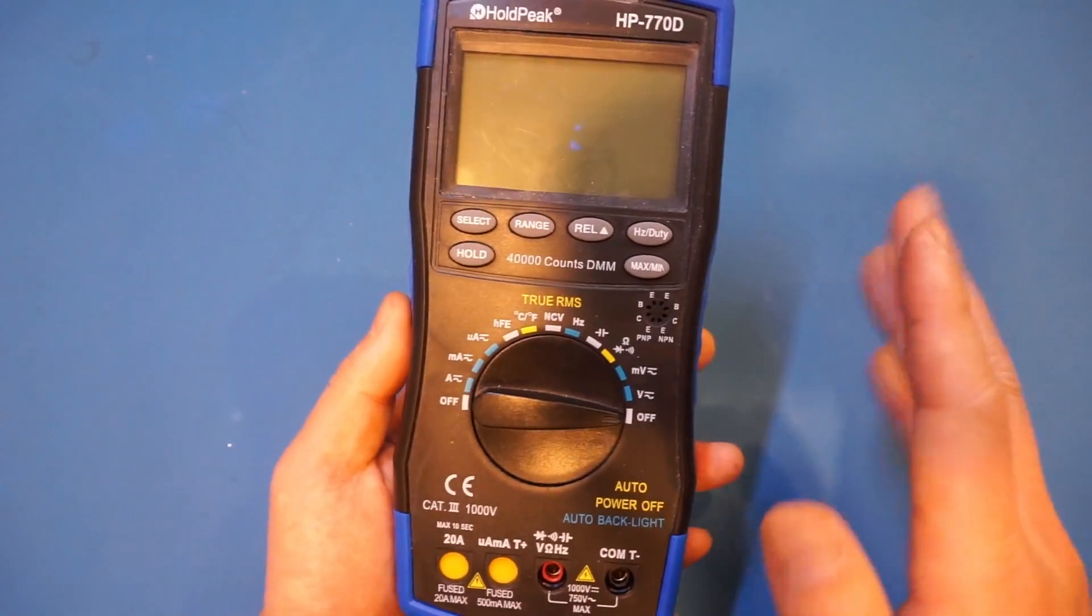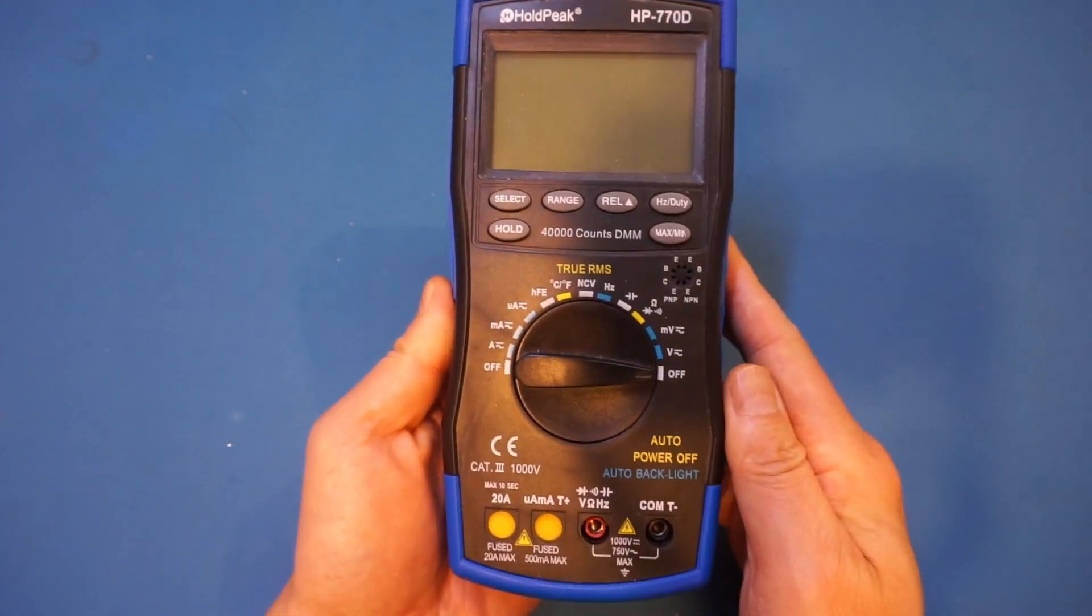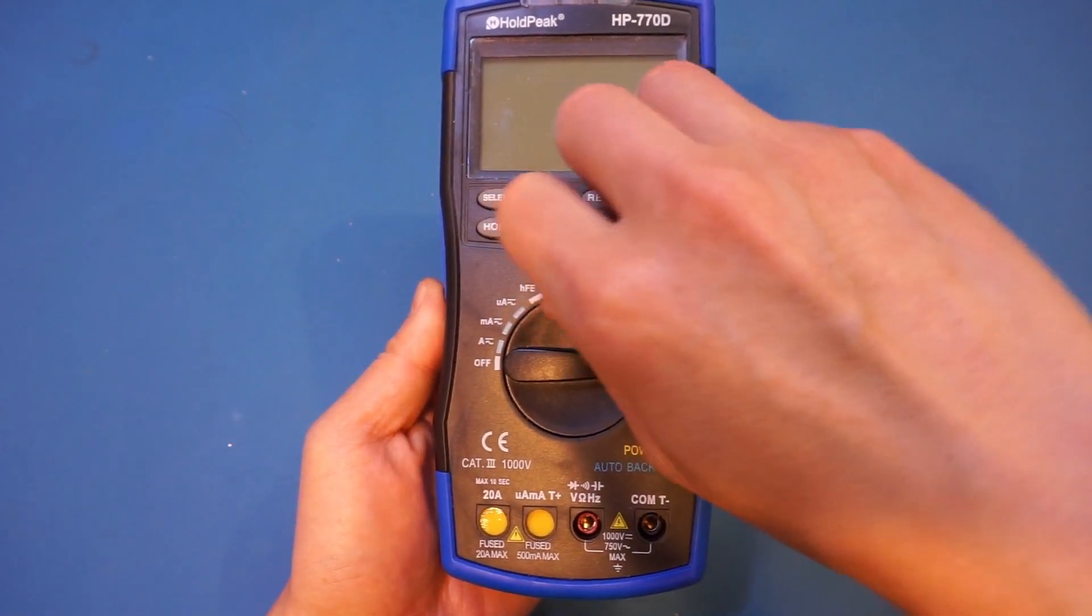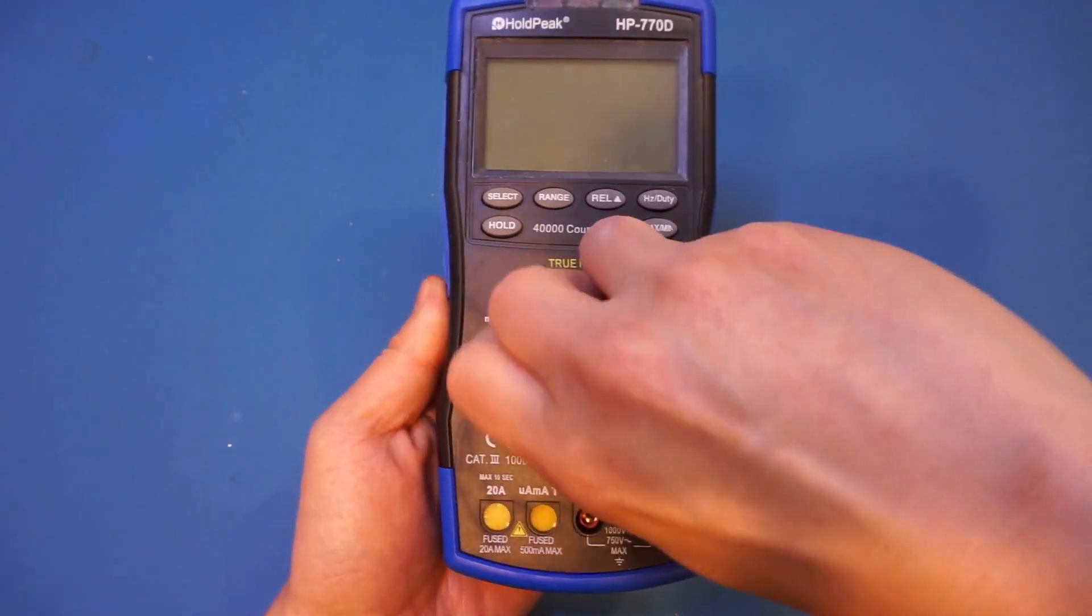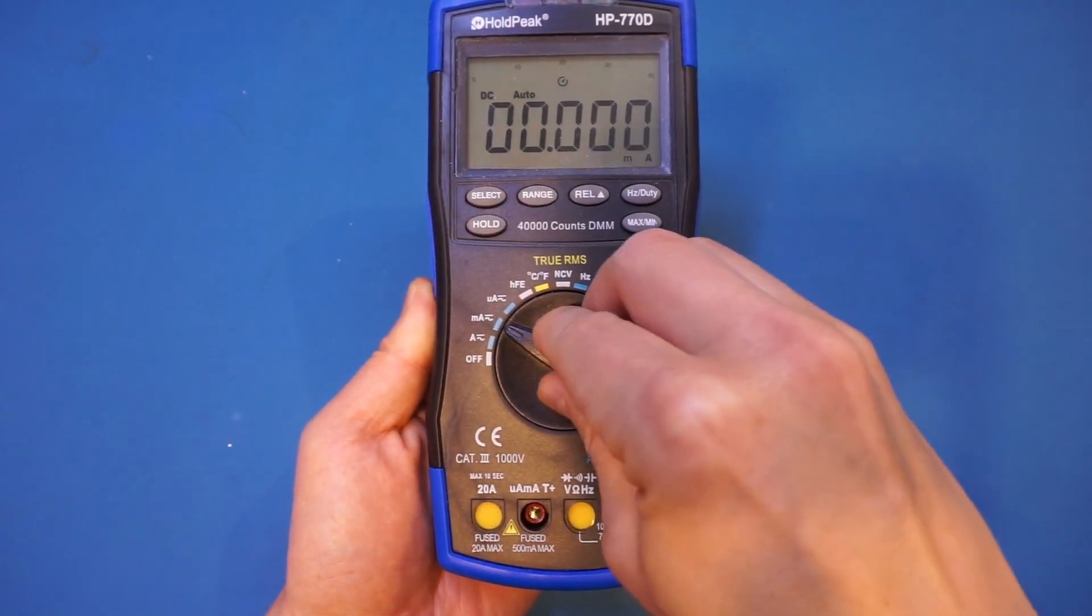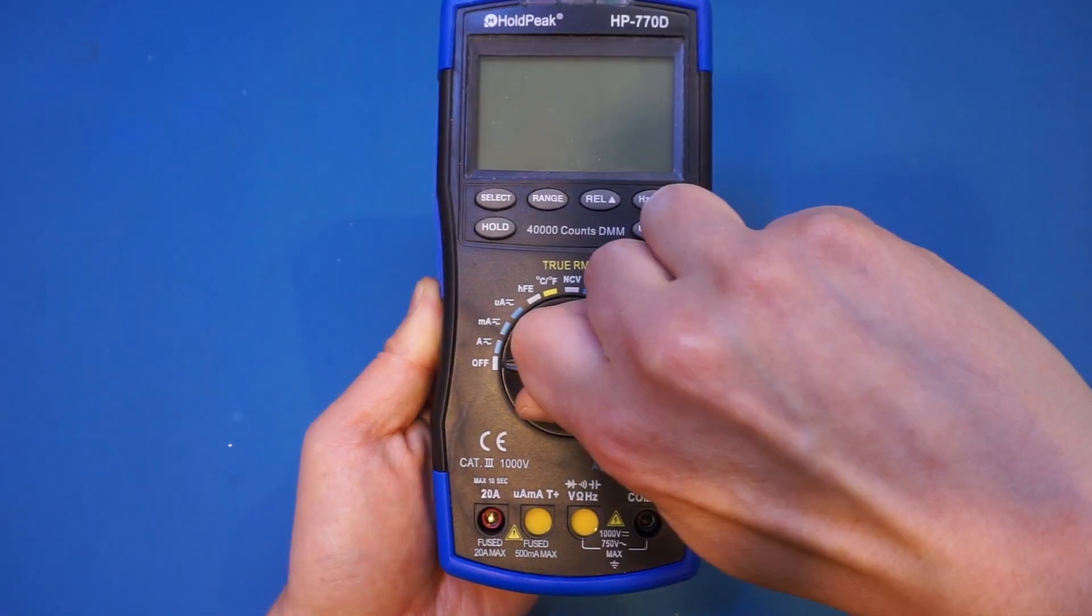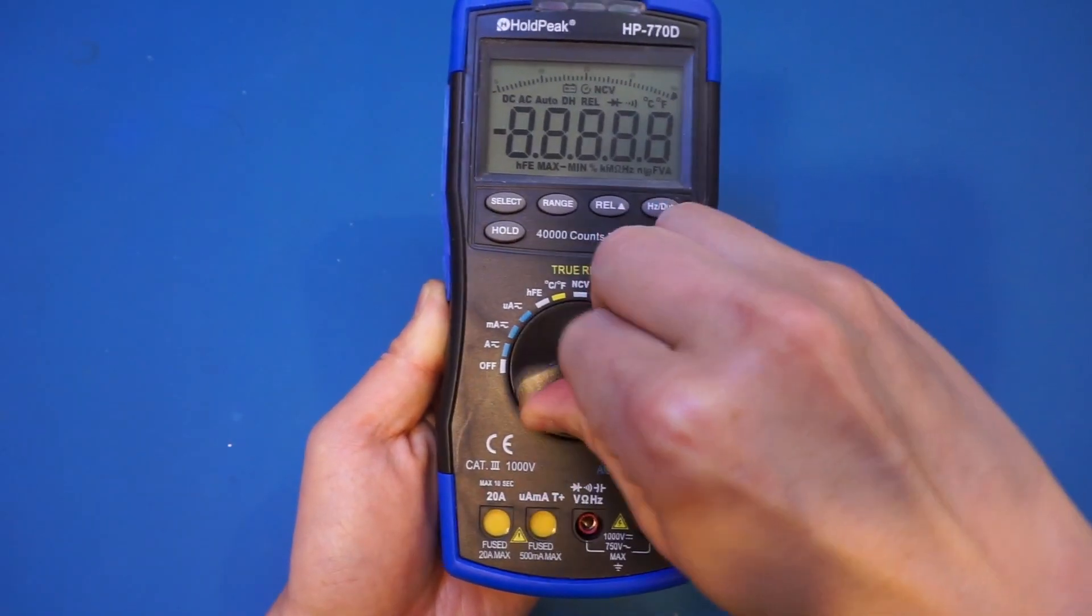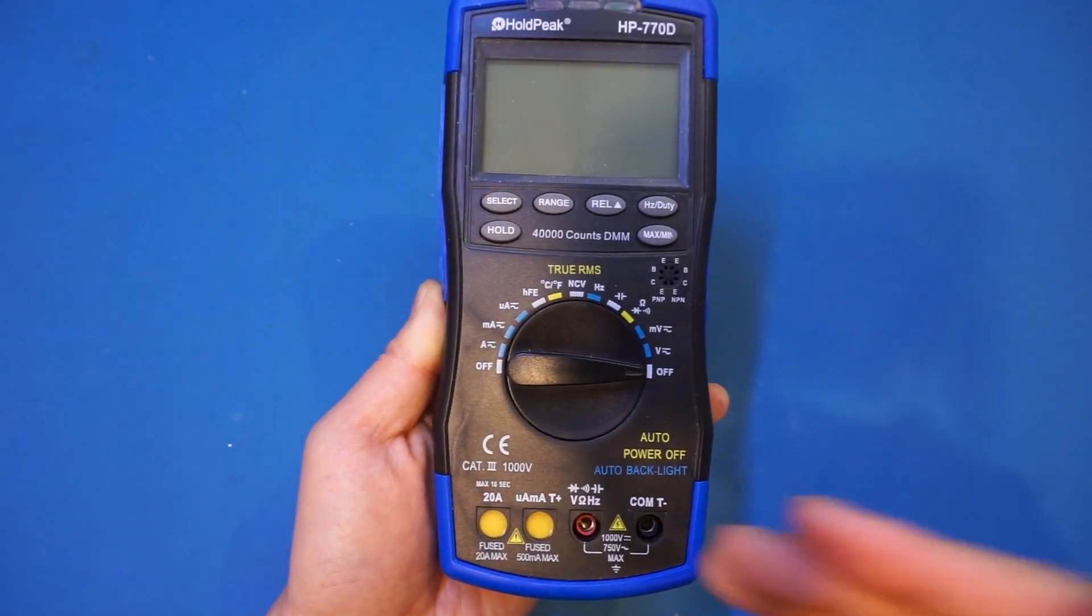Meters with mechanical shutters over the input ranges are also immune from this problem. The Holdpeak HD770D is a good example. I actually like this design a lot, as you can see here. The input shutter physically prevents you from putting the probe into the wrong jack for the given range. And I wish more multimeter manufacturers are using this mechanism. It is very easy to implement, and it's very effective.